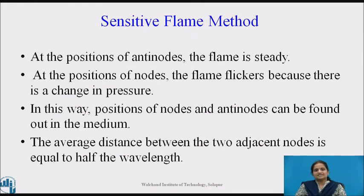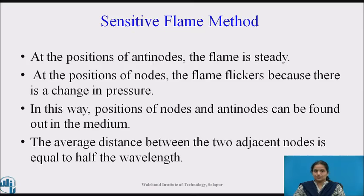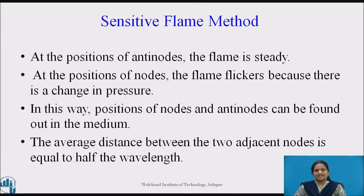The third method is the sensitive flame method. A narrow sensitive flame is moved along the medium. At the positions of antinodes, the flame is steady, and at the positions of nodes, the flame flickers because there is a change in pressure. In this way, positions of nodes and antinodes can be found out in the medium. The average distance between two adjacent nodes is equal to half the wavelength. If the value of the frequency of the ultrasonic wave is known, the velocity of ultrasonic waves propagated through the medium can be calculated.